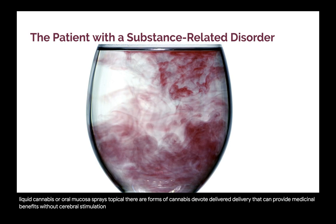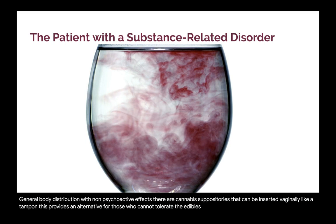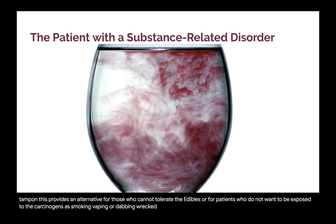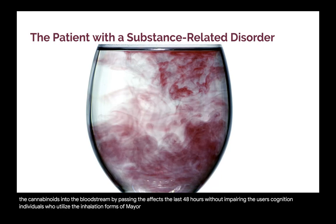Other forms include pill or capsule forms of marijuana, oral liquid cannabis, or oral mucosal sprays. Topical forms of cannabis can provide medicinal benefits without cerebral stimulation — examples are topical creams or oils for localized pain relief and reduction of inflammation. Cannabis suppositories can be inserted vaginally, providing an alternative for those who cannot tolerate edibles or do not want exposure to carcinogens from smoking, vaping, or dabbing. Rectal cannabis suppositories take only 10 to 15 minutes to direct cannabinoids into the bloodstream, bypassing liver metabolism, with therapeutic effects lasting 48 hours without impairing cognition. Individuals who use inhalation forms of marijuana are associated with increased risk of cancer, lung damage, and oral health disease such as oral cancers, periodontitis, and dental caries.